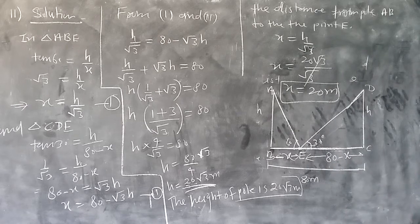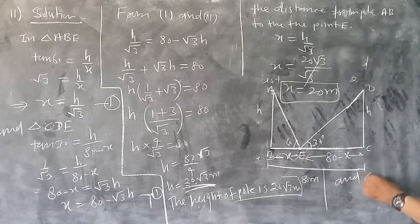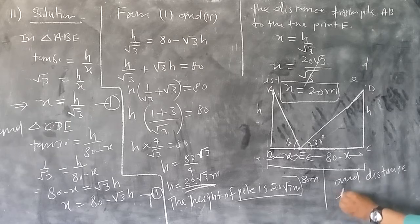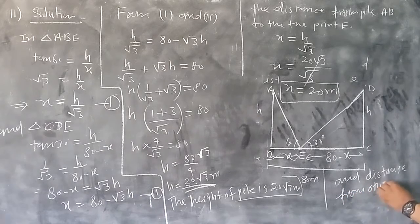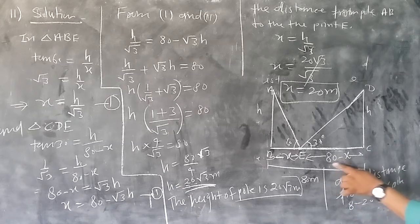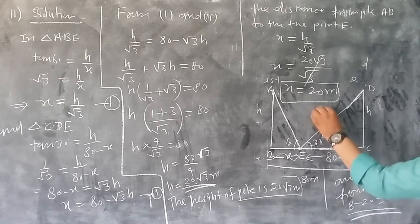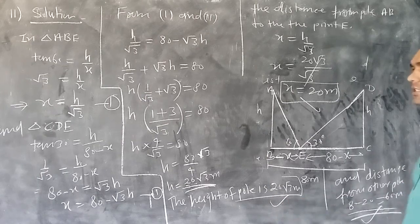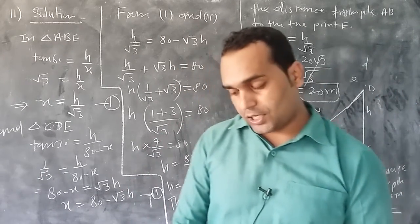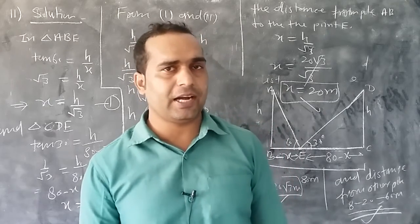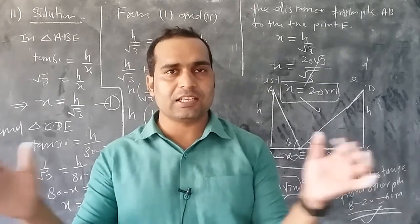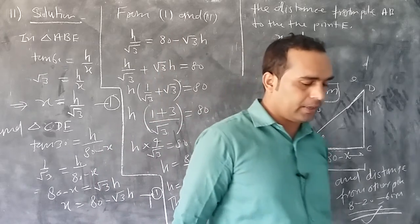The distance from the other pole CD to point E is 80 minus 20 equals 60 meters. So the final answers are: the height of each pole is 20√3 meters, the distance from one pole is 20 meters, and the distance from the other pole is 60 meters. This is how we solve this question.